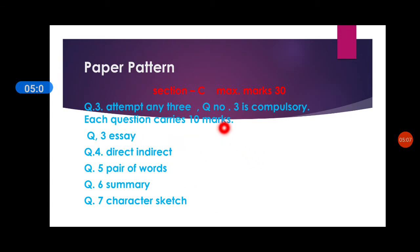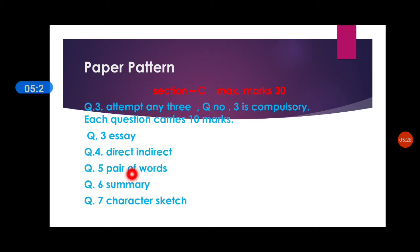In section C, the maximum marks are 30. Question 3 requires attempting any three questions, and question number 3 is compulsory, carrying 10 marks each. Question number 3 is about essays. For questions 4, 5, 6, and 7, there is a choice — two questions for you to choose. If you want to attempt direct-indirect, good. If not, then pair of words, summary, or character sketch. It's up to you which two questions you choose.